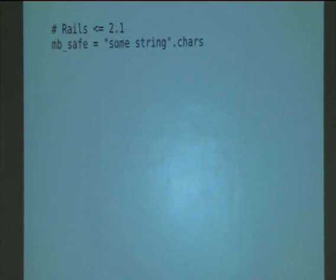Here's another example, different language. Ruby on Rails added a new method to strings called chars, which returns a multi-byte safe version of the string. I don't need to know what that means in terms of Ruby. I'm afraid I'm not a Rubyist. Nonetheless, that's what it was documented to do. So, you say, some string dot chars, and you get the multi-byte safe version.